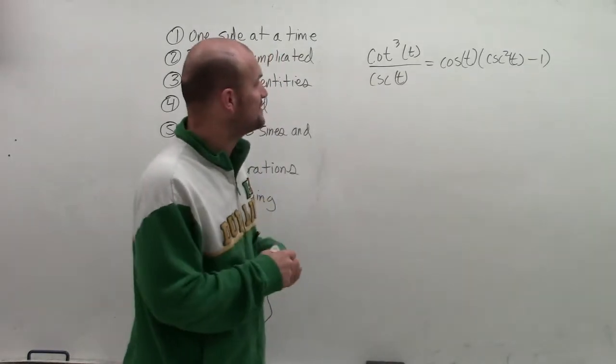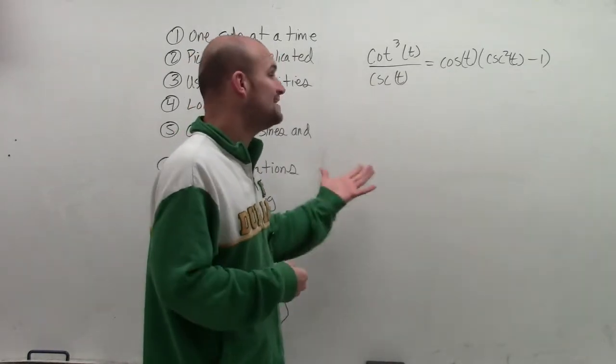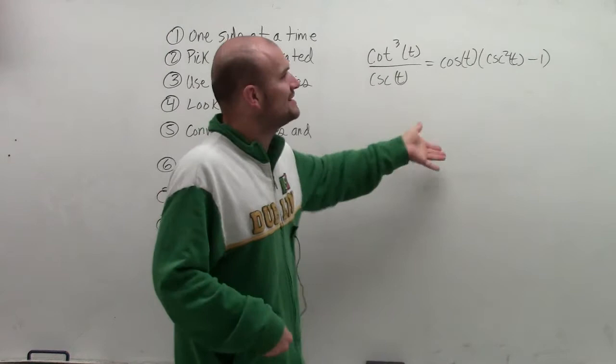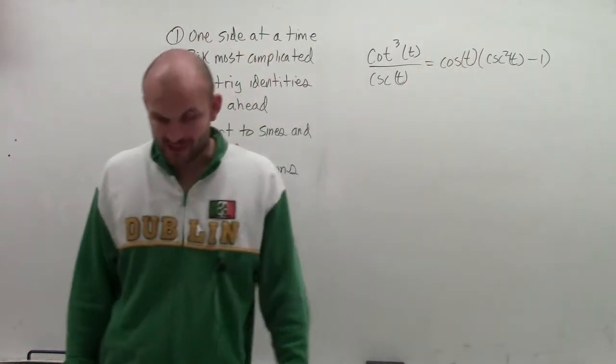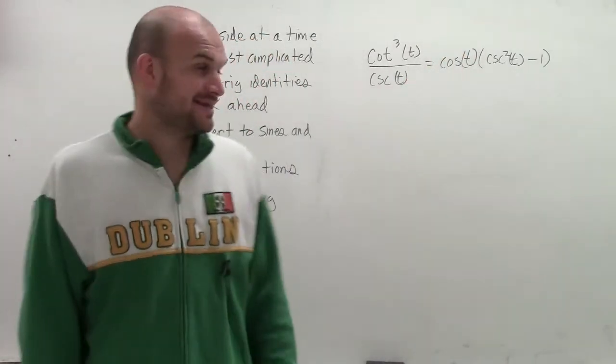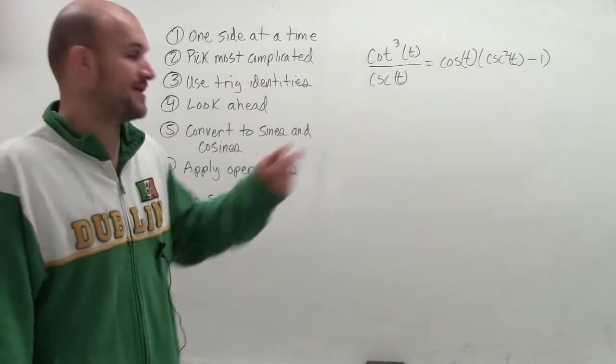Welcome. So what I have is cotangent cubed of t divided by cosecant of t equals cosine of t times cosecant squared of t minus 1. And they want us to verify this. That means make the left side equal to the right side.